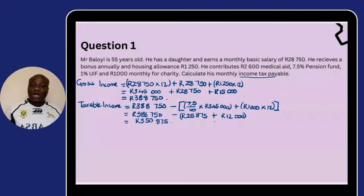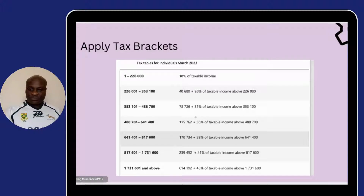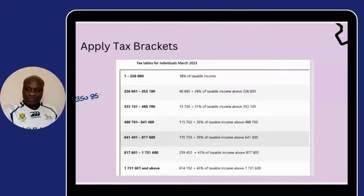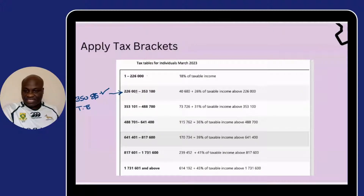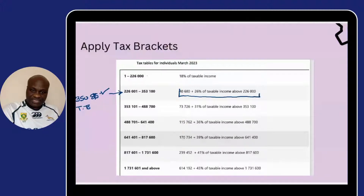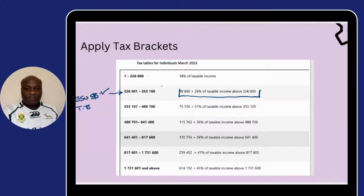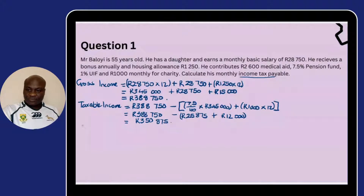Now we apply the taxable income to our tax tables. Our taxable income is R350,875. We check which tax bracket it falls into — it cannot go in the first one because it's above R226,000, and obviously it goes into the second bracket because it's between R226,000 and R353,100. So we apply the tax rate as determined, which is R40,680 plus 26% of the difference between our taxable income and the lower limit of the bracket, which is R226,000.